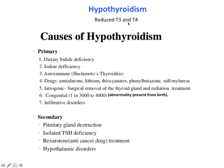Hypothyroidism is caused because of iodine deficiency or autoimmune disease — that is Hashimoto disease. Some drugs can also induce hypothyroidism, like lithium and thiocyanates. In secondary hypothyroidism, pituitary gland destruction and hypothalamic disorder can also cause hypothyroidism.